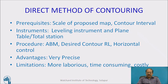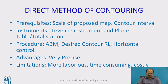Let us begin with various methods of contouring. The first is the direct method of contouring. The prerequisites for the direct method are: we need to decide the scale of the proposed map and choose the contour interval. Normally, we use leveling instruments for vertical control, like a dumpy level, auto level, and leveling staff, and for horizontal control we use a plane table.